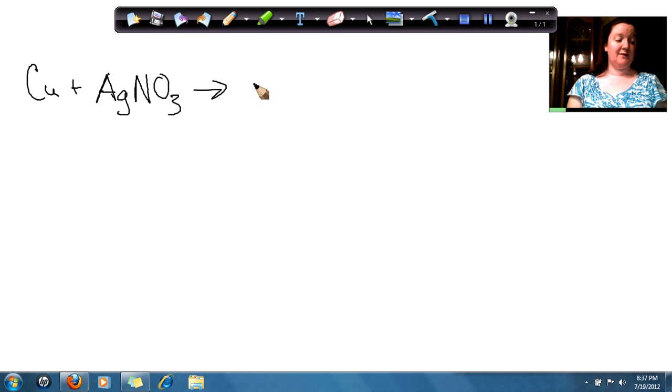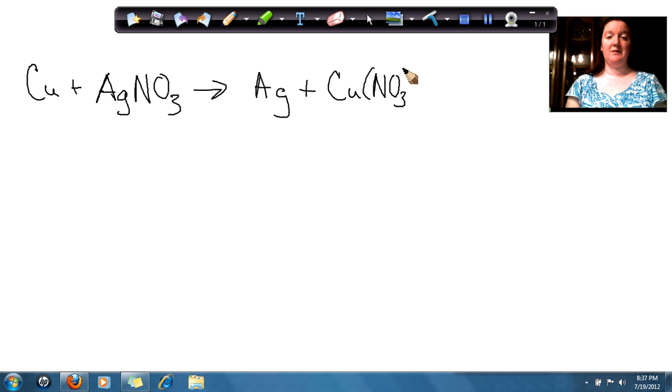And that's going to form silver metal, Ag, plus copper 2 nitrate. So that's telling me my copper has a plus two charge, and my nitrate has a minus one charge. That means I have to have two nitrate molecules to make this a neutral chemical.